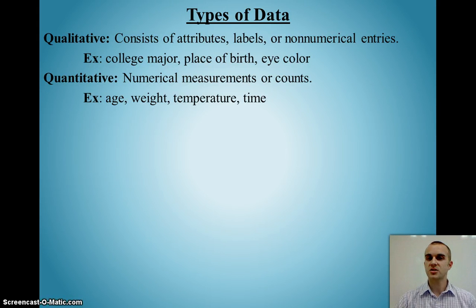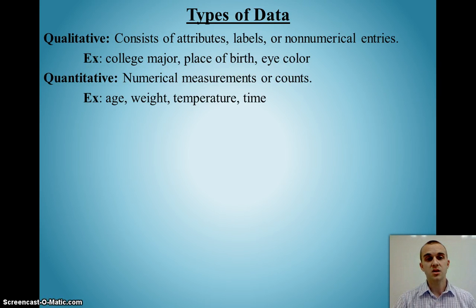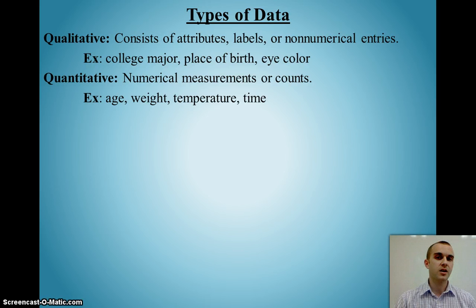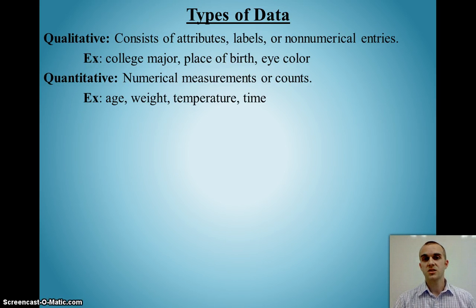Qualitative data consists of attributes, labels, and non-numerical entries. This could include things like finding out someone's college major, their place of birth, their eye color, or how much they enjoy taking swimming lessons — things like that.